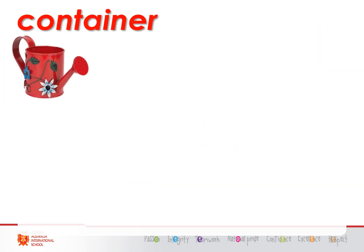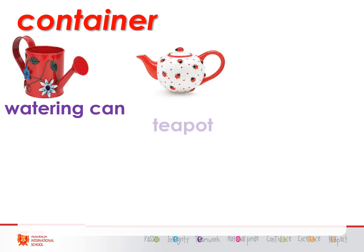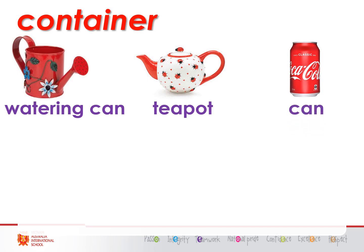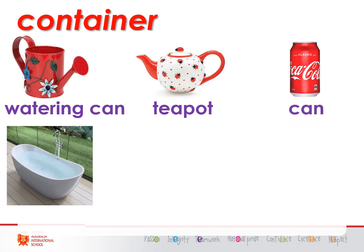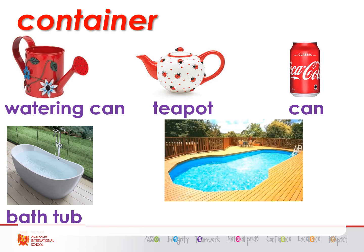More containers. A watering can — we use that to pour water on plants to keep them healthy. A teapot — put our tea in the teapot. A can — a can of soda. A bathtub — have a nice bath. And a swimming pool — go for a nice swim. A swimming pool is a very big container; it contains a lot of water.